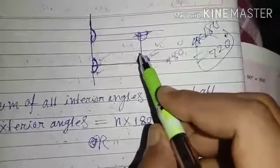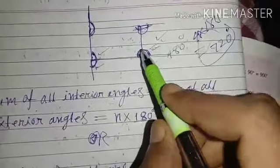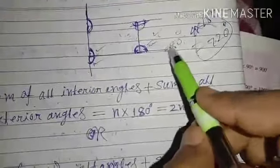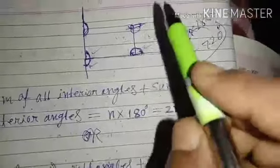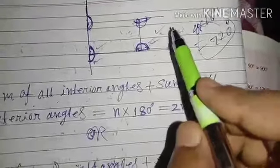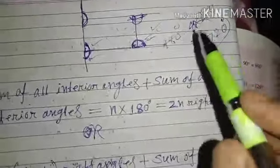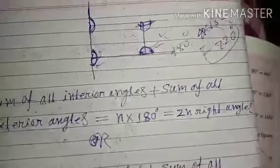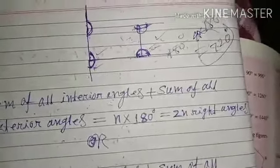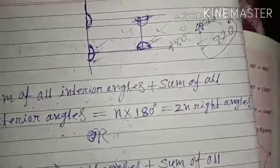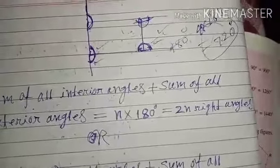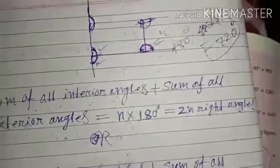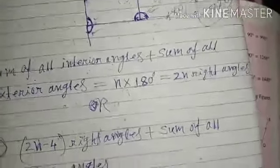For a 4-sided polygon, interior plus exterior equals 720, meaning 4 into 180. For a 5-sided polygon, interior plus exterior equals 5 into 180. For a 6-sided polygon, interior plus exterior angle equals 6 into 180. For a 7-sided polygon, it is 7 into 180, and so on.